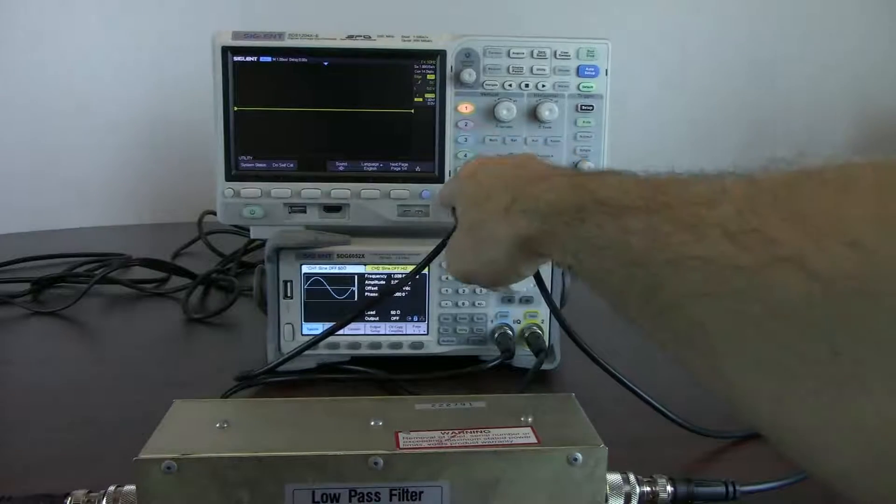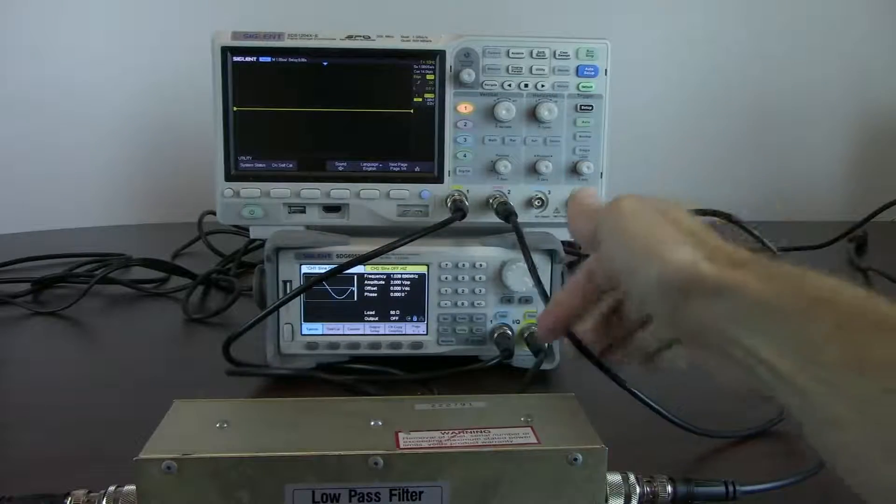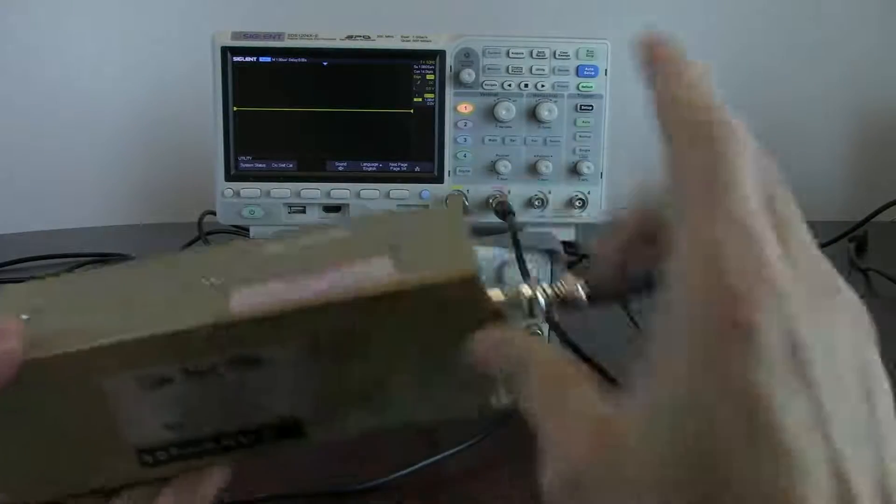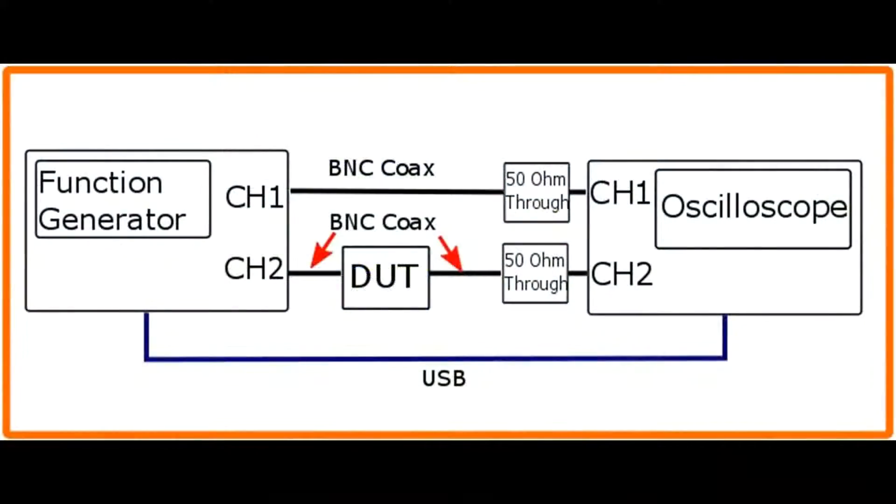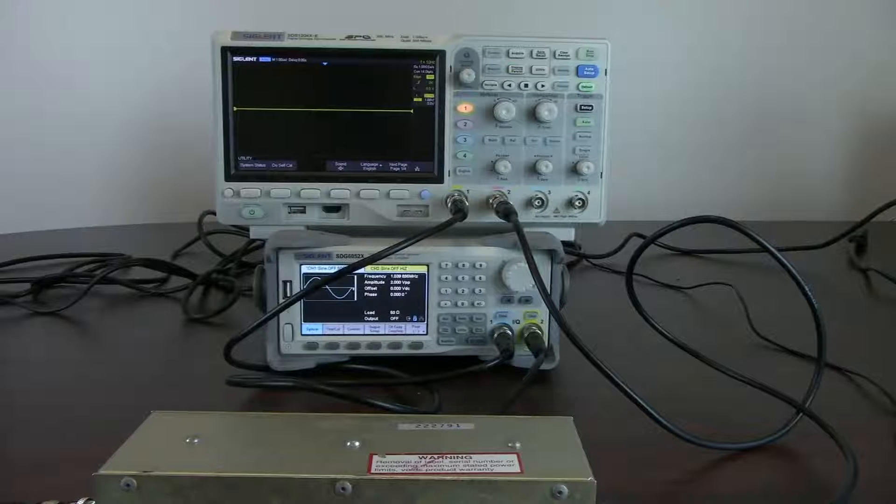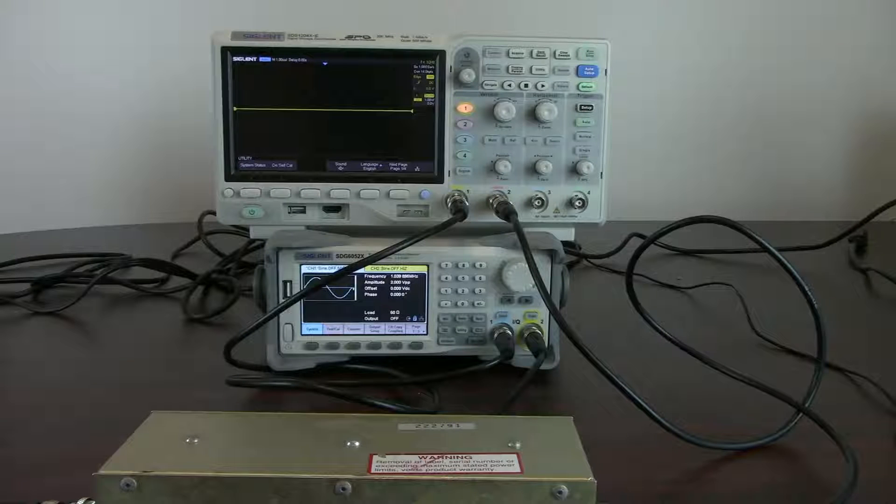So we've got channel 1 connected from the oscilloscope connected to channel 1 on the generator. And we've got channel 2 connected to the output of the device under test. And then the input of the device under test is from the generator channel 2. So channel 1 output is going directly to channel 1 on the scope. Channel 2 output on the generator is going to the device under test, through the device under test, and then after the device under test is going to channel 2 of the oscilloscope. So we're going to be able to monitor and measure both channel 1 and channel 2, amplitude, phase, and we'll also be able to measure frequency and plot those all on the oscilloscope very easily.